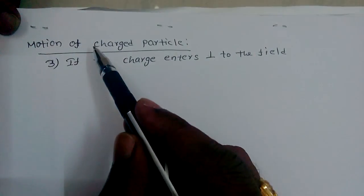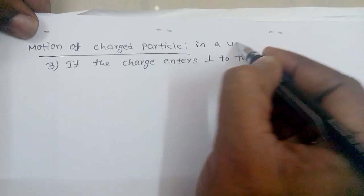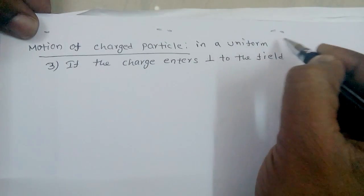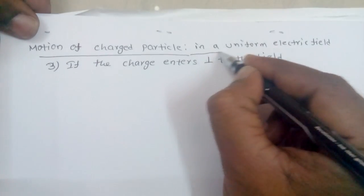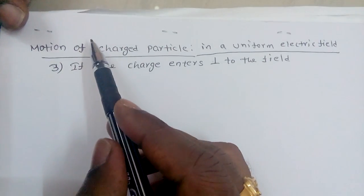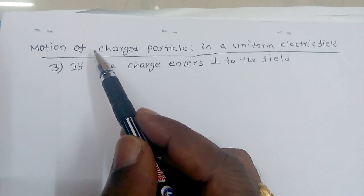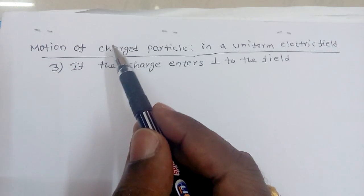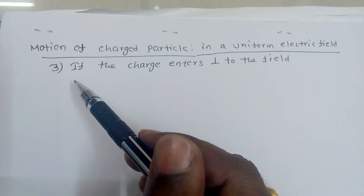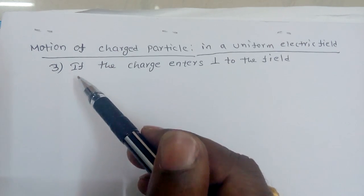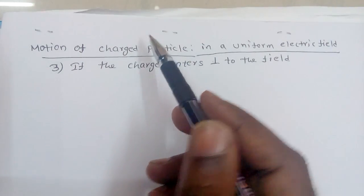This is a continuation of the last class on motion of charged particles in a uniform electric field. In the last class, we studied the case where a charged particle is initially at rest in an electric field, and also the case where it enters into the field with some velocity in the direction of, or opposite to, the electric field.